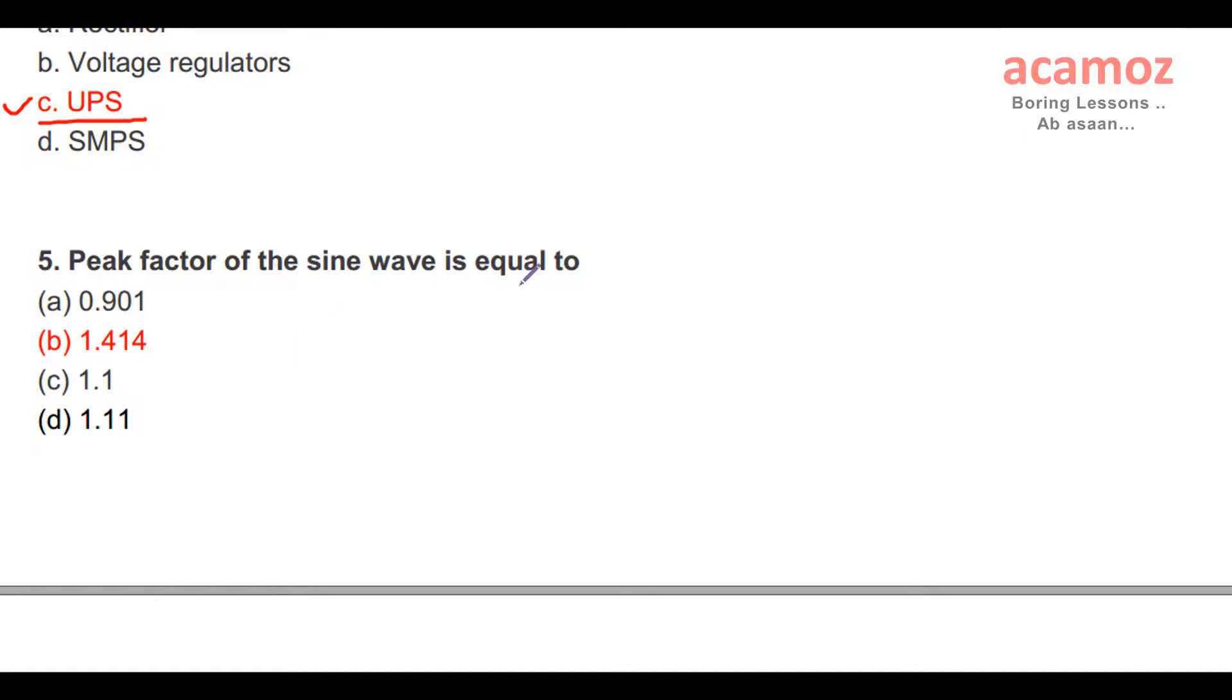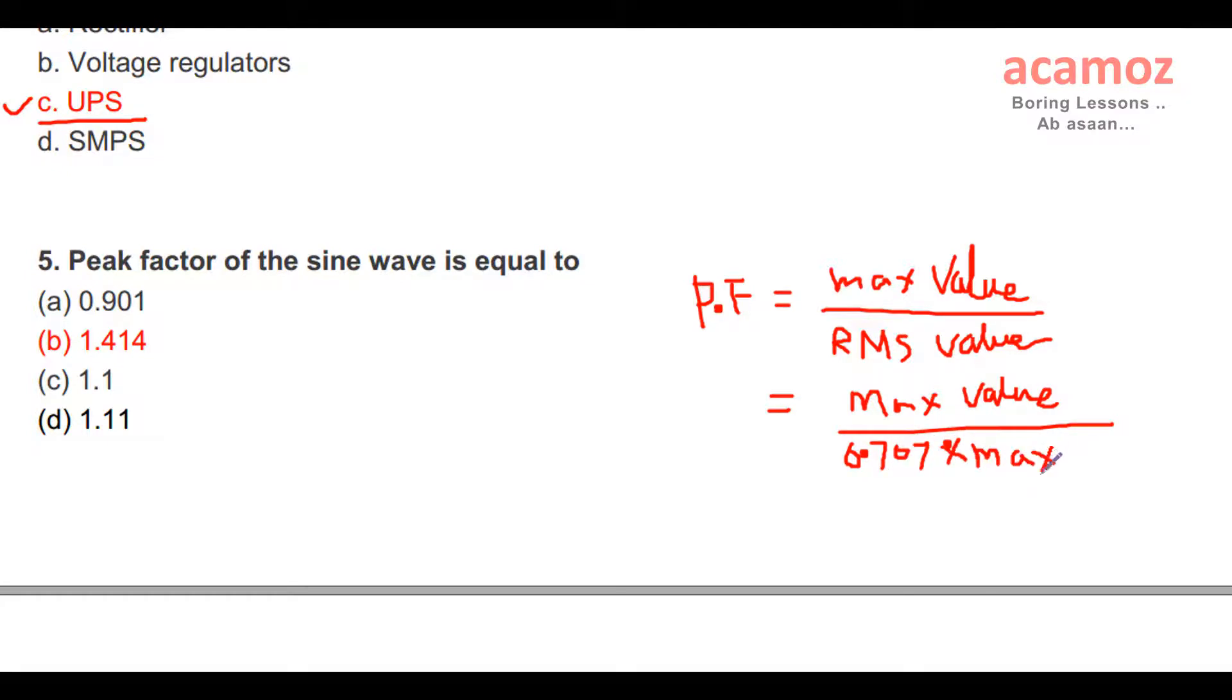Fifth question: Peak factor of the sine wave is equal to? Peak factor is defined as maximum value divided by RMS value. Maximum value divided by RMS value is 0.707 of maximum value, then maximum value is cancelled. The answer is 1 divided by 0.707. If we calculate 1 by 0.707, that equals 1.404. The answer is 1.404.